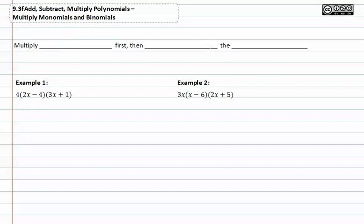When you multiply monomials and binomials, it's important to multiply binomials first. Then you can go ahead and distribute the monomial through.